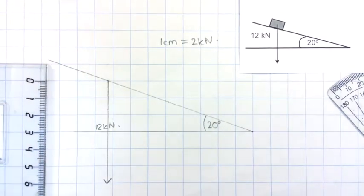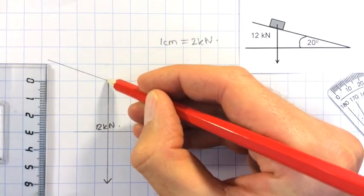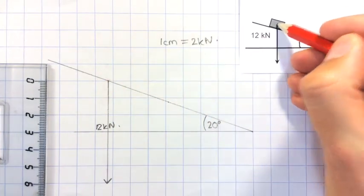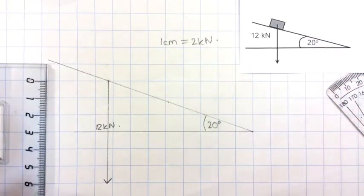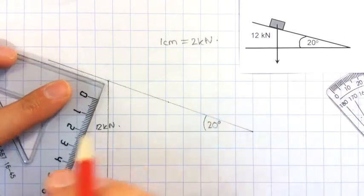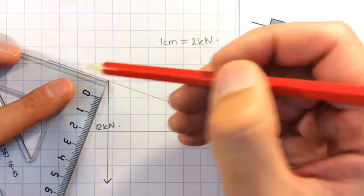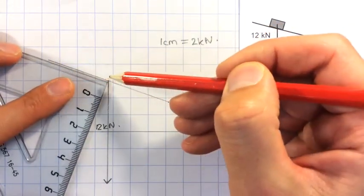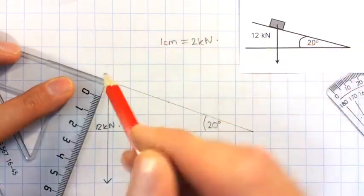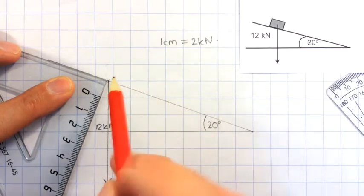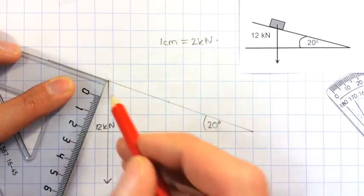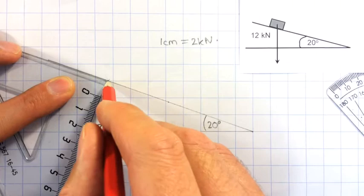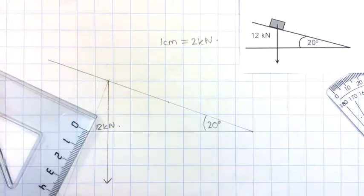Now, this is where you'll see why it's so useful that we started that from this point rather than from the centre of mass of the car. What I need to do now is put my set square so that this side of it lines up with the slope, and this end is lined up with the start of my 12 kN arrow. And then I just draw in a construction line like that.